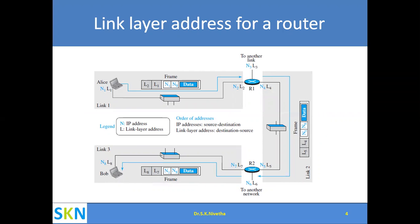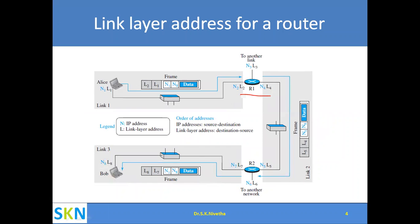This diagram shows the link layer address for a router. We have Router 1 and Router 2, each having three interfaces. N represents IP address and L represents link layer address. For Router 1, three link layer addresses — L2, L3, L4 — are assigned, one per interface, and three IP addresses — N2, N3, N4 — are similarly assigned.